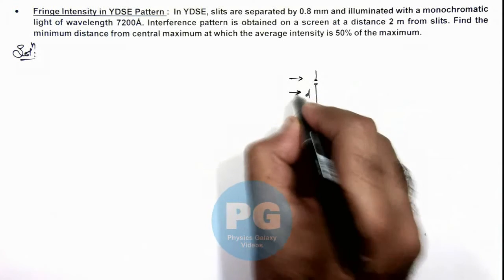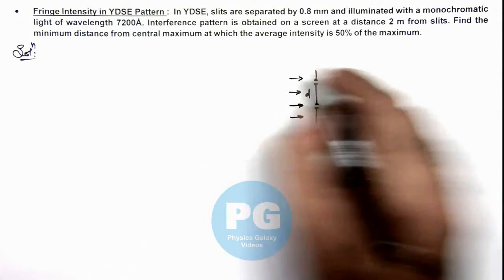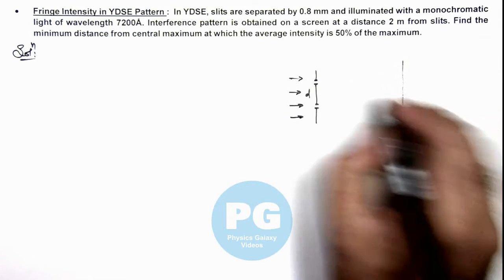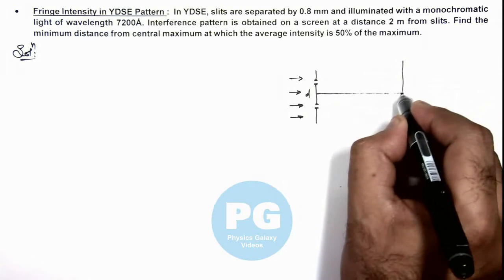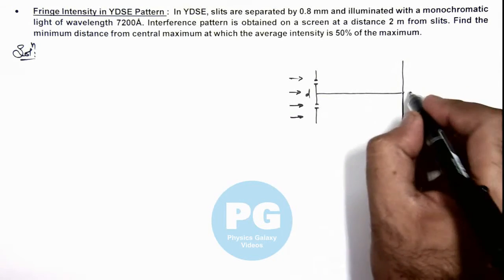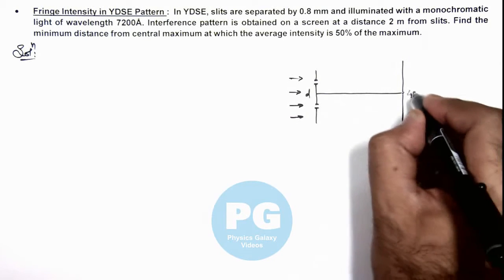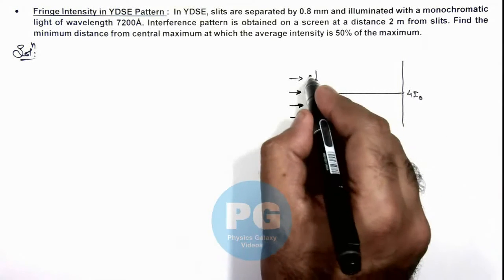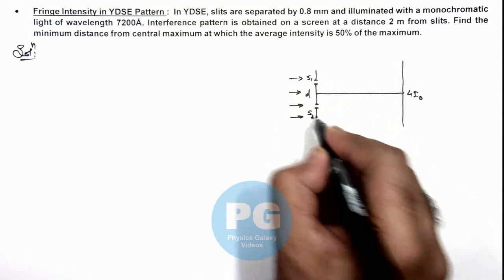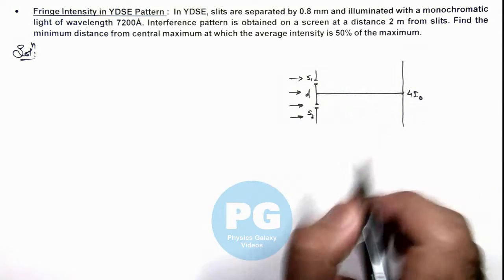When slits are illuminated simultaneously, then at the center of screen we know that intensity is given by 4 I₀, if each slit S1 and S2 is producing a light intensity I₀.